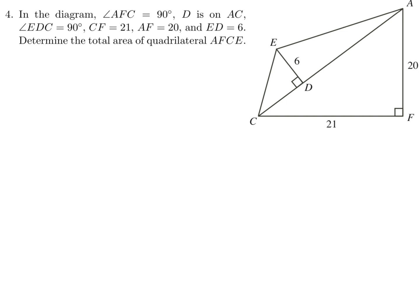In the diagram, angle AFC is 90 degrees, D is on AC, angle EDC is 90 degrees, CF is 21, AF is 20, ED is 6. Determine the total area of quadrilateral AFCE. Okay, so AFCE. I'll break it up into two triangles. The first one being ACF, and then the other triangle being ECA.